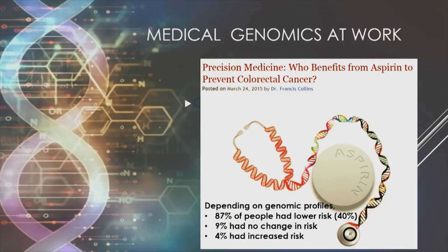It has been known for a few years that there is a significant benefit to humans to take doses of aspirin regularly to prevent colorectal cancer. In fact, for most people, regular aspirin — two tablets a day — will reduce your risk of colorectal cancer by almost 50%. About 87% of people fall into this category.